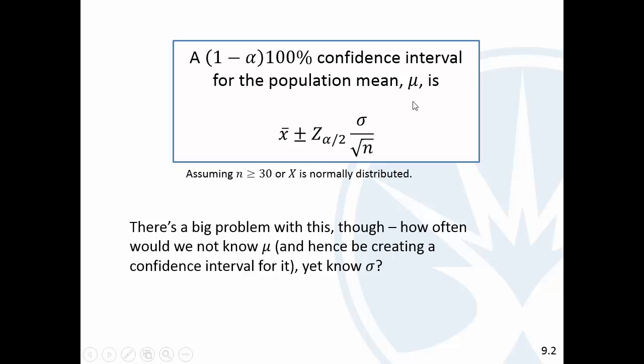which is a confidence interval for the population mean. So, the implication here is you don't know the population mean, and you're finding a confidence interval for it. But the formula uses the standard deviation. So, how often would you not know the population mean, but you would know the population standard deviation? I mean, we might have a couple homework questions about this in theory, but really that's not going to happen.